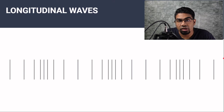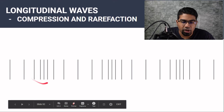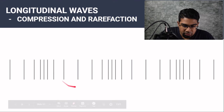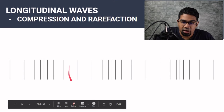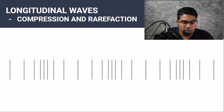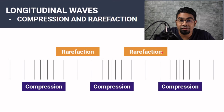Longitudinal waves do not have crests and troughs. However, they have compressions and rarefactions. You can see that there are certain regions where the lines are very close together — they seem to be compressed. And then there are certain regions where the lines are very far apart. These alternate: very close together, far apart, very close together, far apart. The regions where the lines are compressed are known as compressions, and in between them we have the rarefactions. This is opposed to crests and troughs.